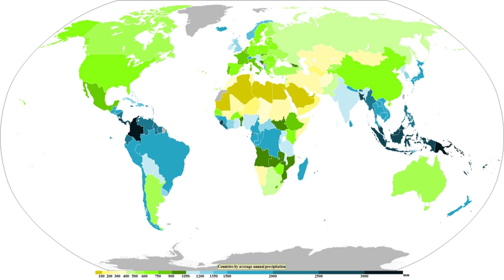The Sahel, the Mediterranean, Southern Africa and parts of Southern Asia have become drier. There has been an increase in the number of heavy precipitation events over many areas during the past century, as well as an increase since the 1970s in the prevalence of droughts, especially in the tropics and subtropics. Over the contiguous United States, total annual precipitation increased at an average rate of 6.1% per century since 1900, with the greatest increases within the East–North–Central climate region and the south. Hawaii was the only region to show a decrease.